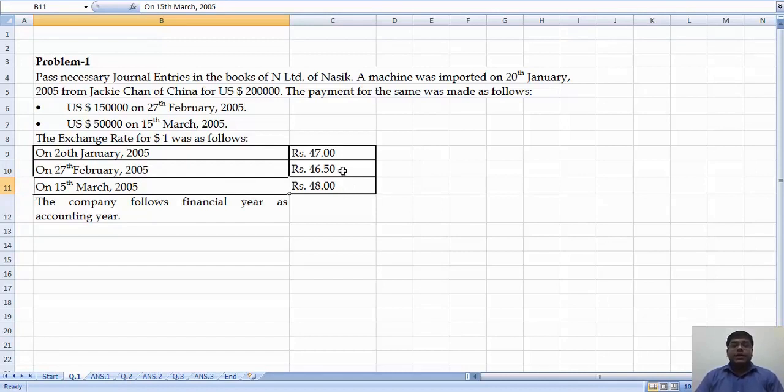So on 27th the rate has been decreased and 15th March the rate has been increased. So these two terms we have taken into account while posting the journal entries.